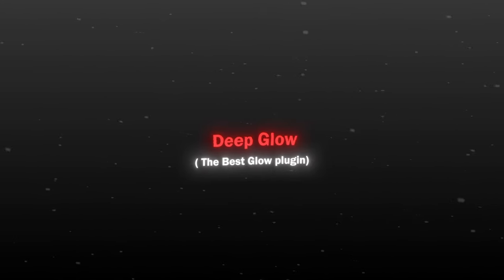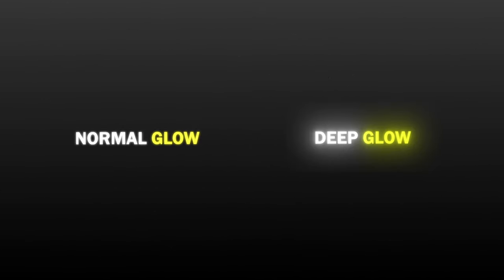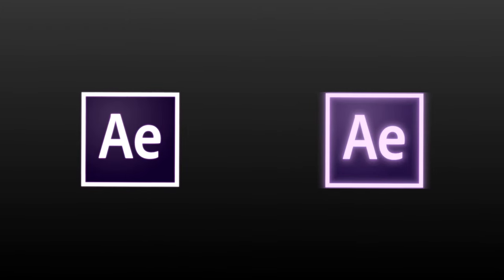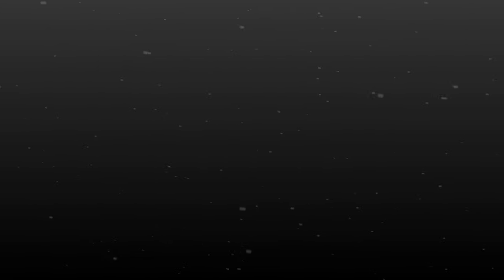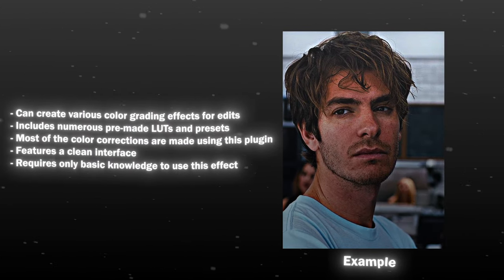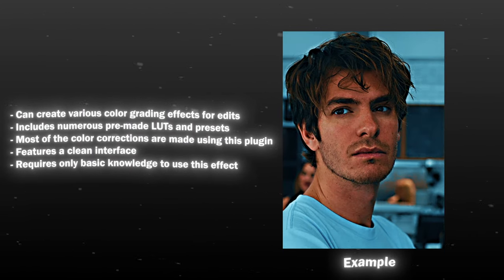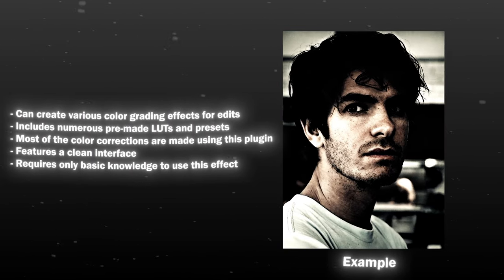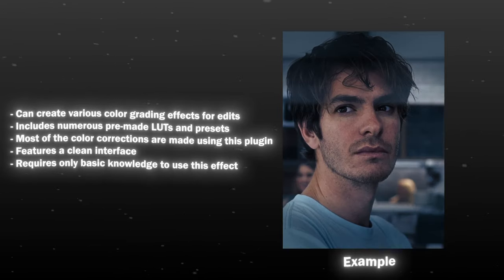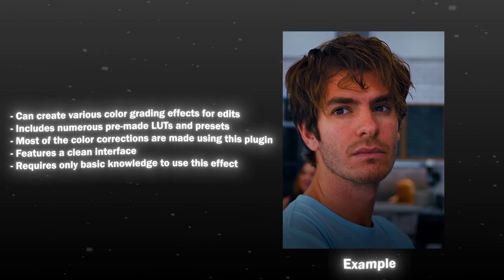Deep Glow is a plugin to make good glow in After Effects. I often use this on text and PNGs. Magic Bullet Looks is a plugin to make colorings and stuff. You can see many editors making their own color corrections using this plugin.